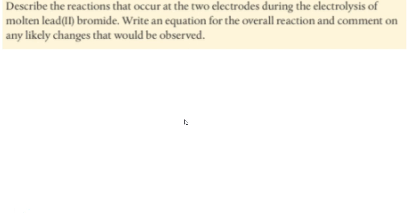So we can take a look at a reaction here. Describe the reaction that occurs at the two electrodes during the electrolysis of molten lead bromide. Now, it has to be molten. You can't do this with solid lead bromide. It has to be in its liquid phase. Write an equation for the overall reaction. Comment on any likely changes that we observe. So first of all, lead bromide, we've got to figure out the formula for that. So lead is +2 right here, and bromine is -1. So that should be PbBr2 using the crisscross rule. And so when that falls into its ions, we get lead with 2+, and bromine minus.